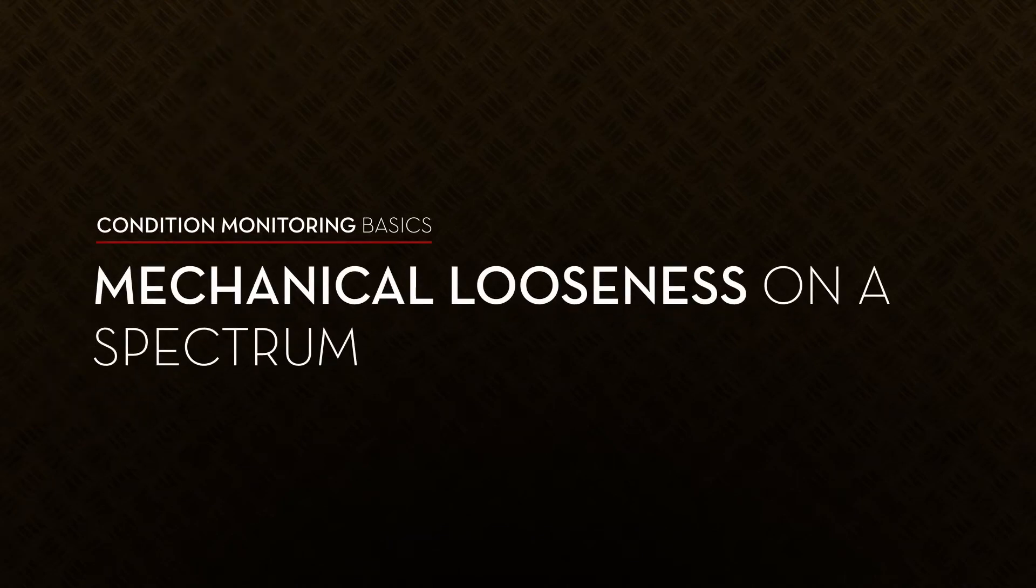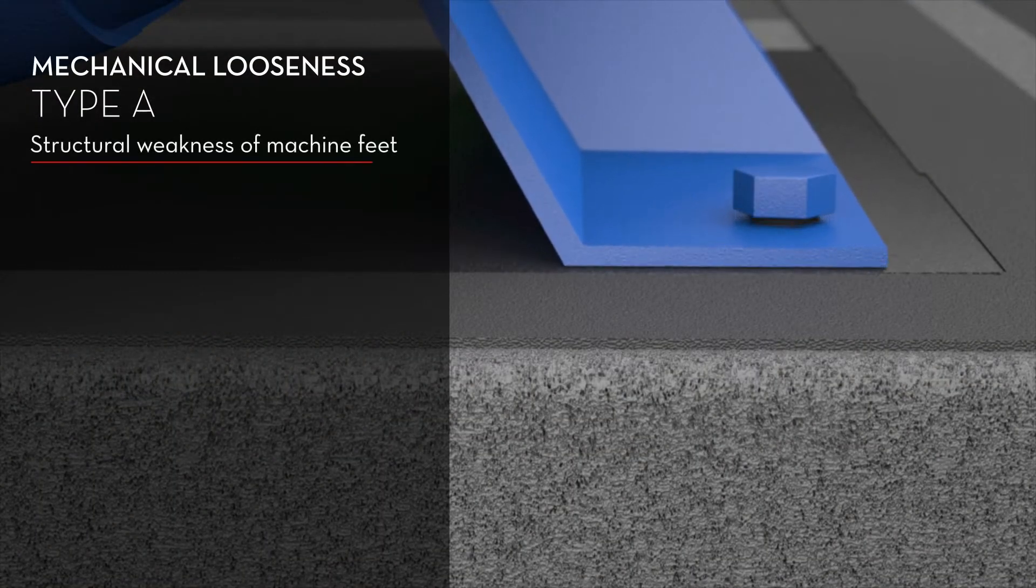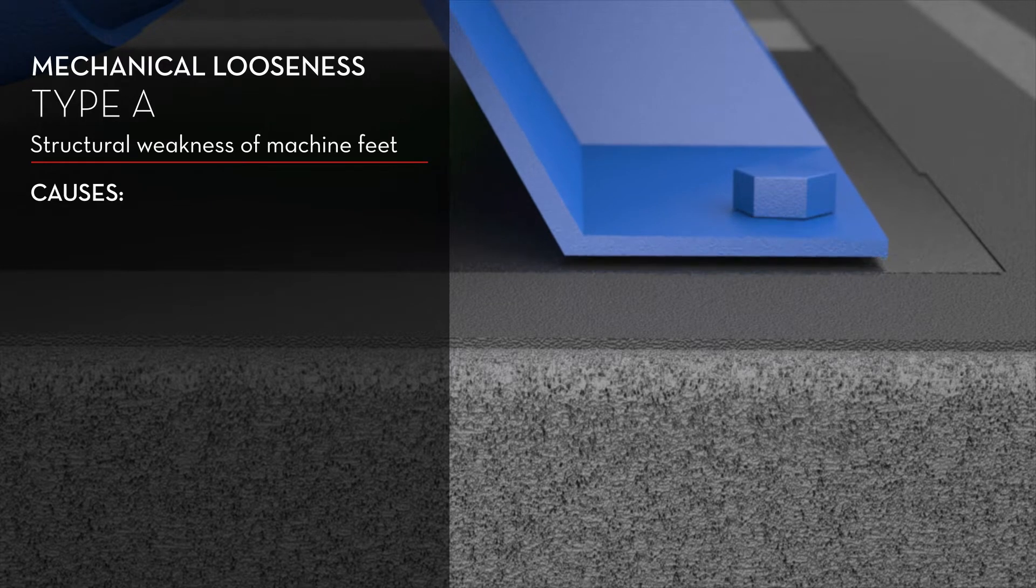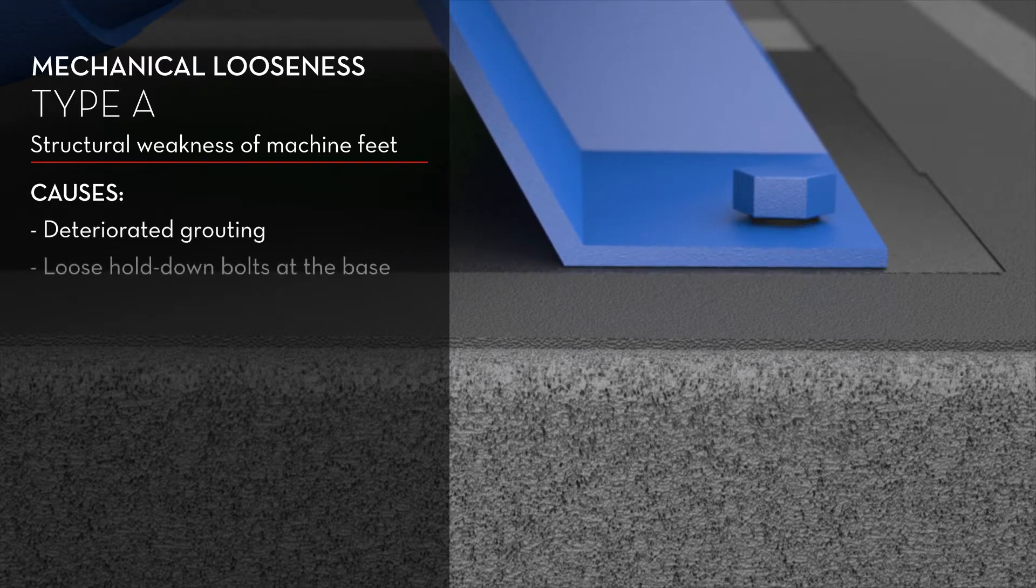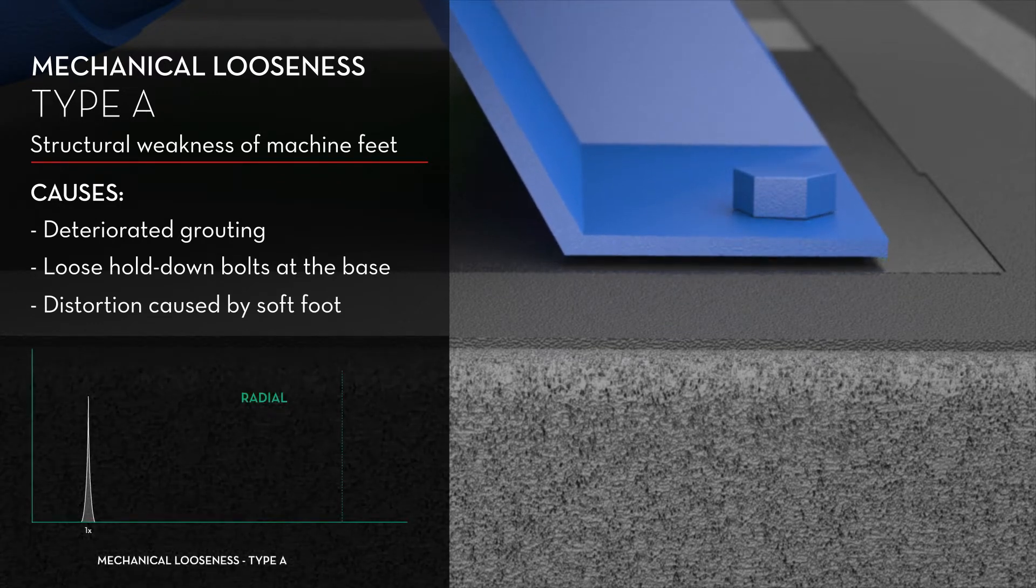There are three types of mechanical looseness. The first type, type A, is structural weakness of machine feet. It can be caused by deteriorated grouting, loose hold down bolts at the base, or distortion caused by soft foot. Type A appears on the spectrum as one pulse per revolution.